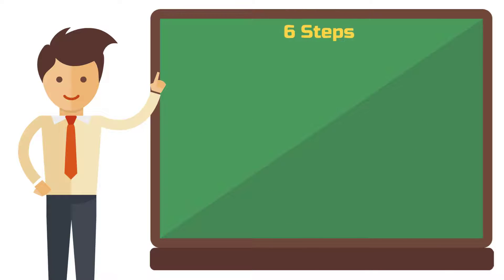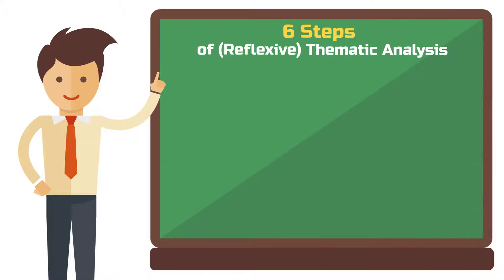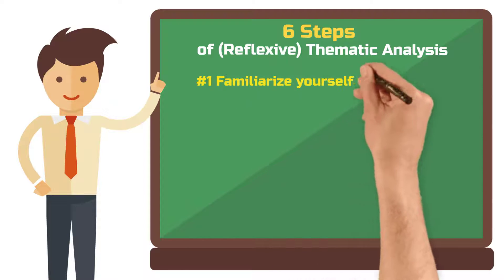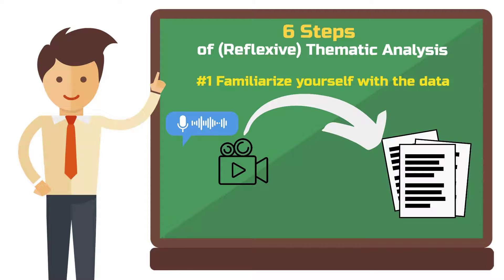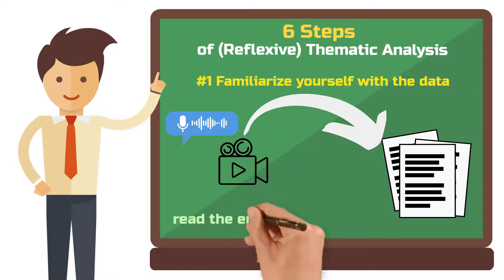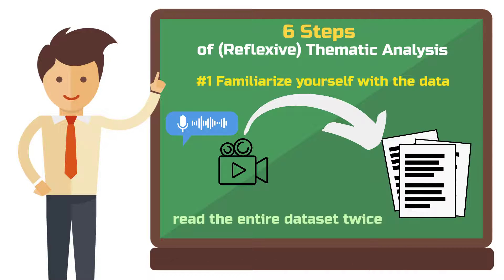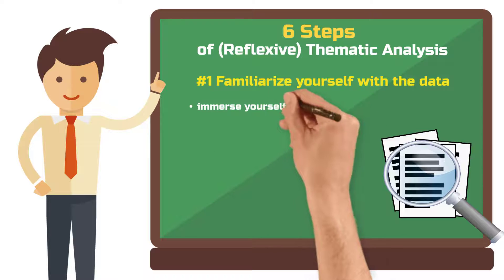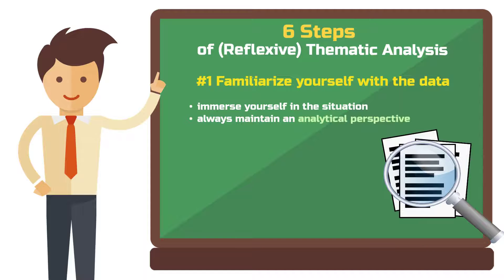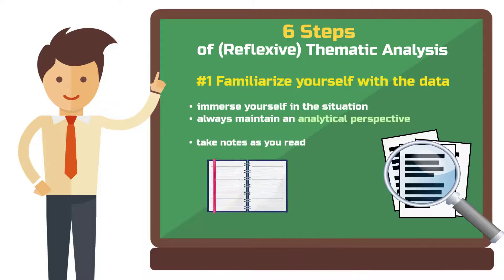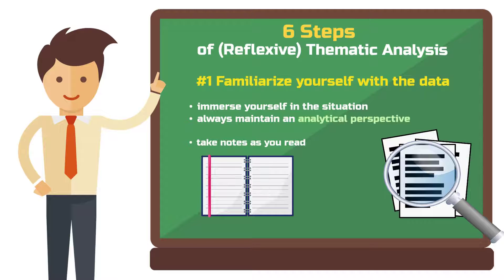What now follows are the six steps of reflexive thematic analysis as proposed by Brown and Clark. Step 1: Familiarize yourself with the data. First, transcribe your data if you have it only available in audio or video format. Then read the entire dataset twice, from start to finish. This gives you a good overview of all your material — it's better than starting to evaluate a transcript without knowing the rest. Try to fully immerse yourself in the situation described in the transcripts, while always maintaining an analytical perspective. Take notes as you read; you can also take notes right after conducting an interview or while visiting a company on site, if that's your research context.